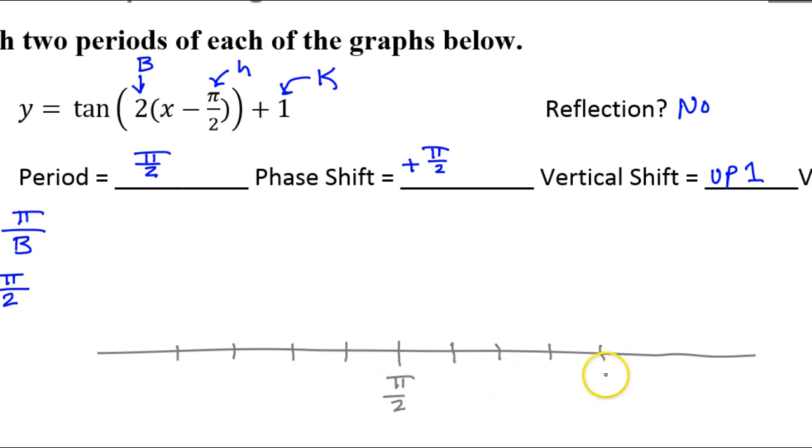Now I need to label all these, and to do that, I'm going to ask myself, what is one quarter of a period? Because the way we use these markings, every position is always one quarter of a period higher than the previous position. So what is a quarter period in this case? Quarter period. Well, the period is π over 2. So a quarter period should be one-fourth of π over 2, which equals π over 8.